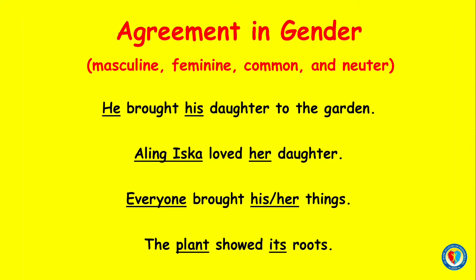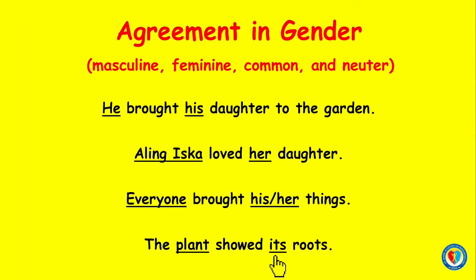Feminine example: 'Alimiska loves her daughter.' The pronoun is her, and the antecedent is Alimiska, which is feminine. Common gender example: 'Everyone brought his or her things.' The pronoun is his or her, and the antecedent is everyone, which is common in gender. Neuter example: 'The plant showed its roots.' The pronoun is its, and the antecedent is plant, which is neuter in gender.